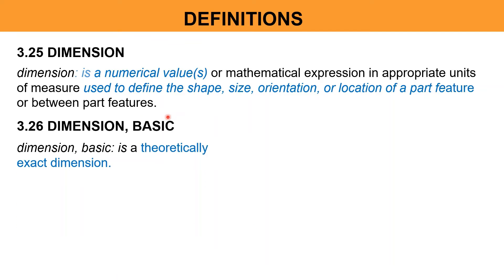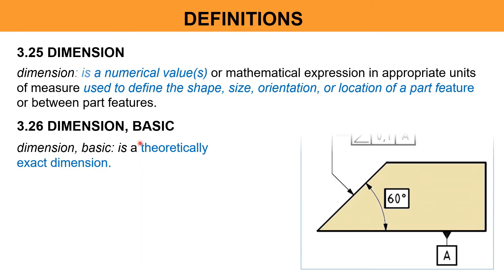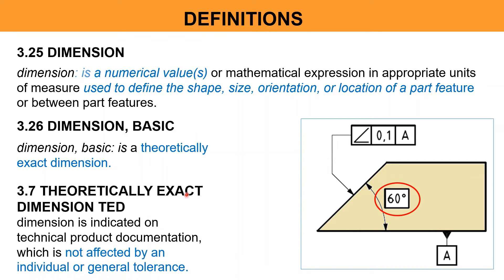Dimension Basic: It is a theoretically exact dimension. Theoretically exact dimension is indicated on technical product documentation, that is called engineering drawings, which is not affected by an individual or general tolerances.